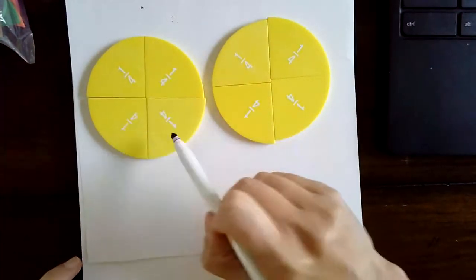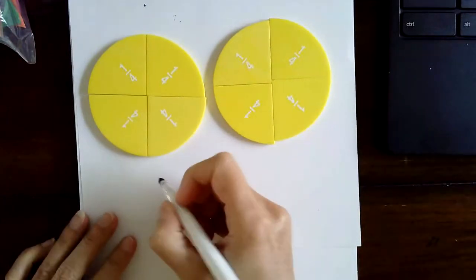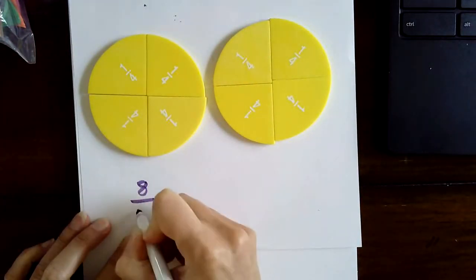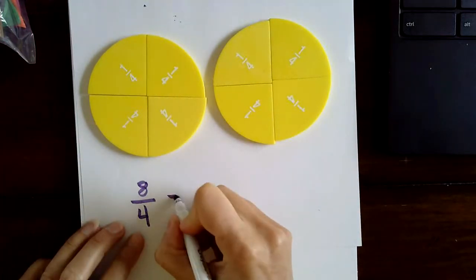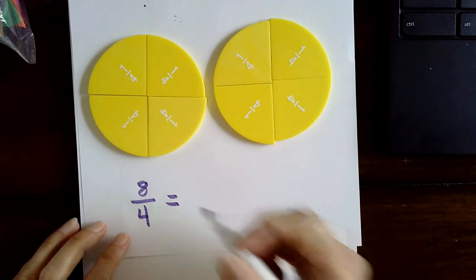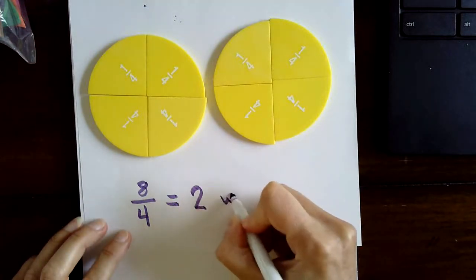One, two, three, four, five, six, seven, eight. We have eight fourths. So eight fourths is equal to two wholes.